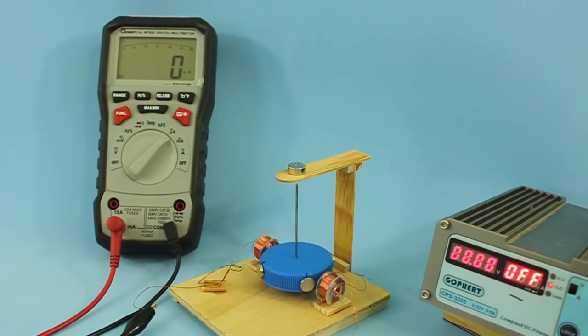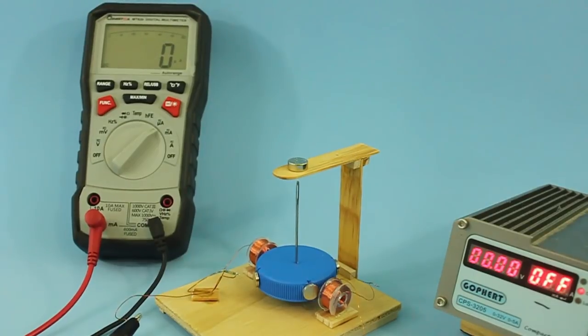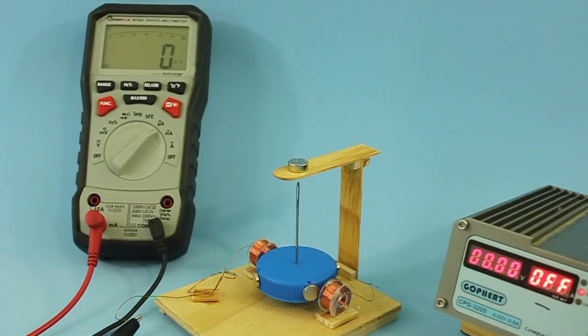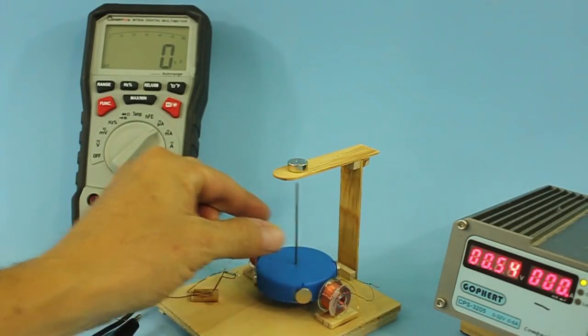Let's see the motor work at 0.5 volts. I have connected the multimeter to check the current draw. The meter is in the range of microamps. I will turn on the power supply and give an initial push to the motor.